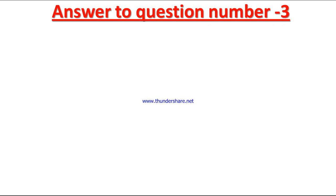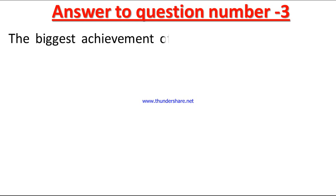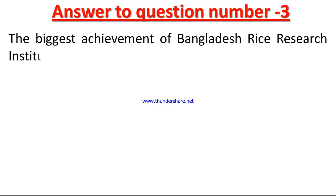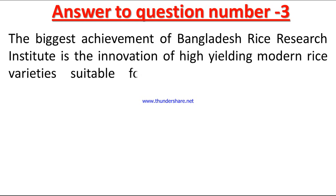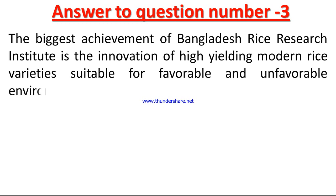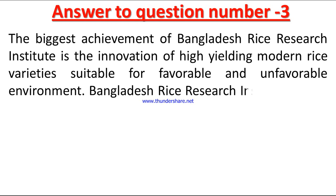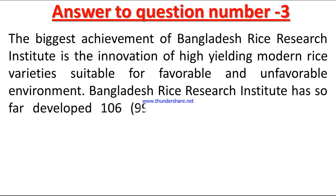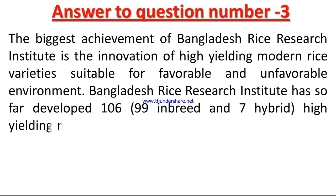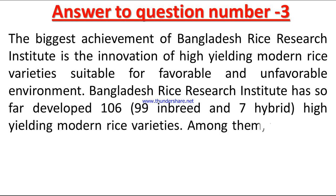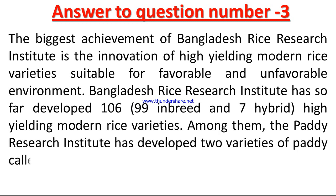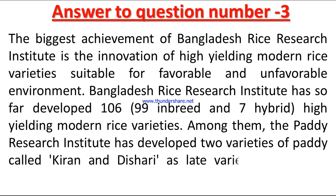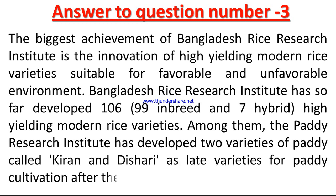Answer to question number three: The biggest achievement of the Bangladesh Rice Research Institute is the innovation of high-yielding modern rice varieties suitable for favorable and unfavorable environments. The institute has so far developed 106 inbred and seven hybrid high-yielding modern rice varieties. Among them, the institute also developed two varieties of paddy called Kiron and Dishari as late varieties for paddy cultivation after floods.